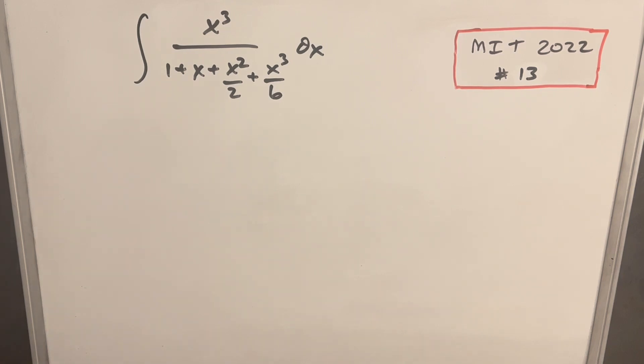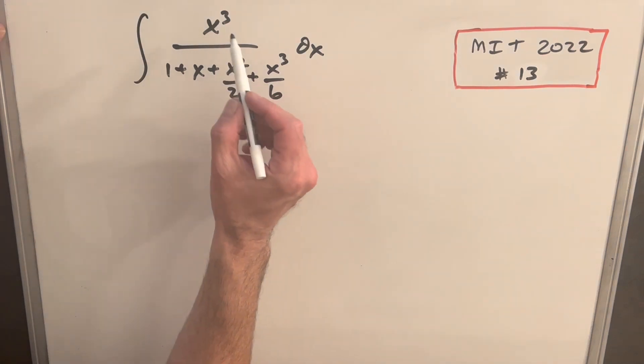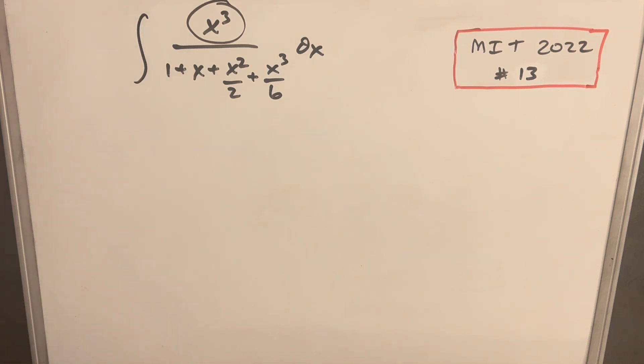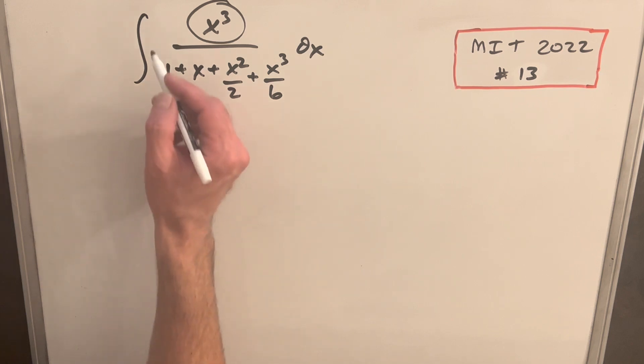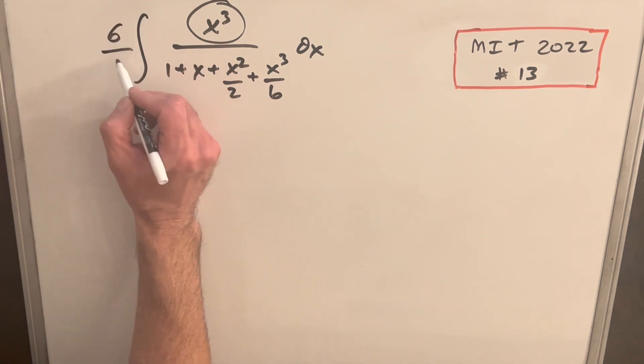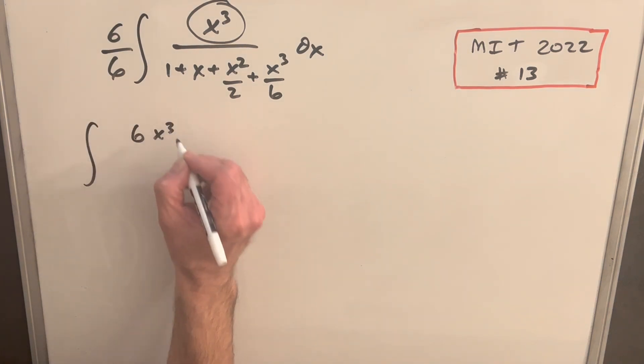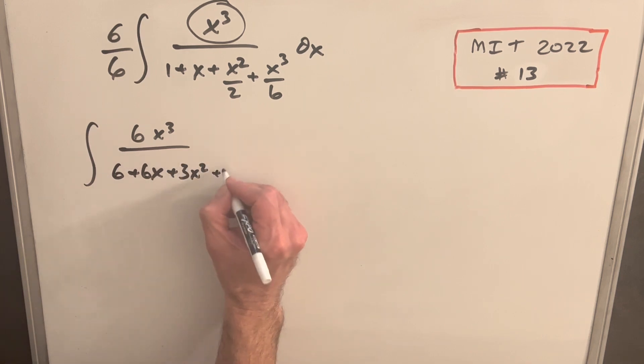I didn't really have any fancy tricks for this one. I just noticed whenever we have the same or greater degree in the numerator, what we can do is just do long division. Before I did that, just because I don't really like fractions, I multiplied through by 6 over 6 to the numerator and denominator, and so we're going to have 6x cubed over 6 plus 6x plus 3x squared plus x cubed dx.